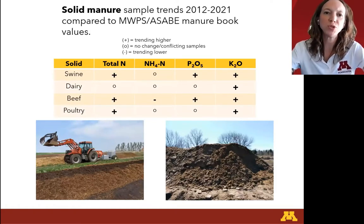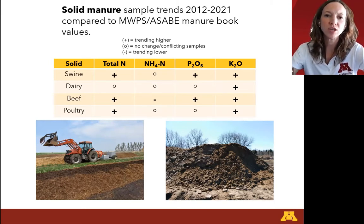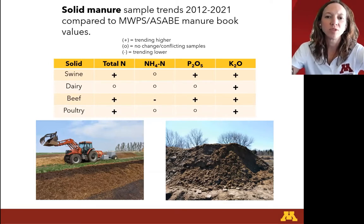Moving over to solid manure: swine saw a trending increase in total nitrogen, P2O5, and K2O. Dairy saw a trending increase in potassium. Beef saw a trending increase for total N, phosphorus, and potassium, but trending lower for ammonium. And poultry saw an increase in total N and a trending increase for potassium. We'll look at a few highlighted examples next.